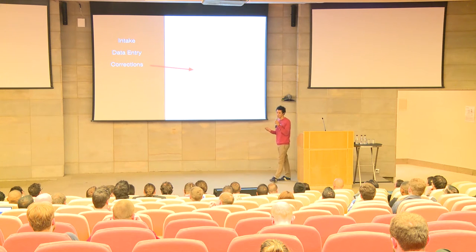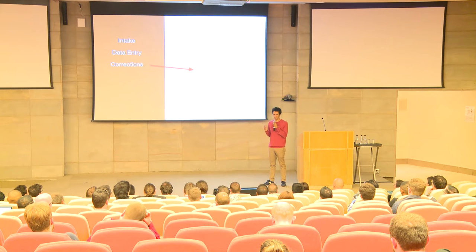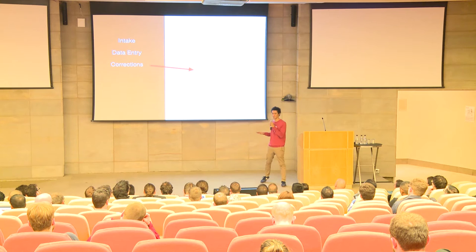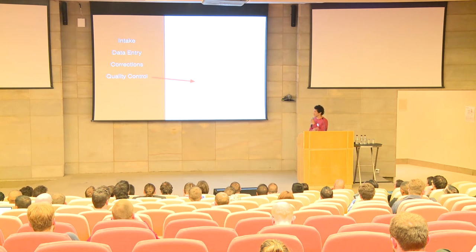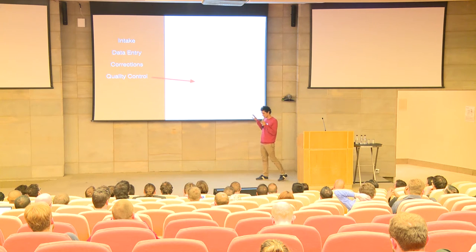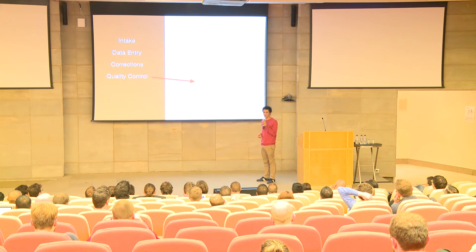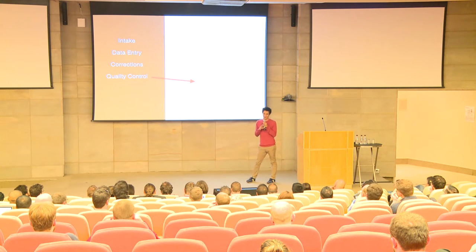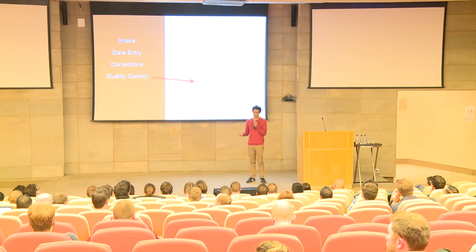Next we move on to a corrections person. If there are any inconsistencies between the two entries, somebody sees the two different entries, they have the paper in front of them, and they determine which entry is correct — or flag that something is very wrong and send it back. After that there's a quality control stage. Corrections is skipped if the two data entries are equivalent; otherwise it goes to quality control, where another person at another station sees the entered data, compares it to the paper, and makes sure the representations are equivalent.